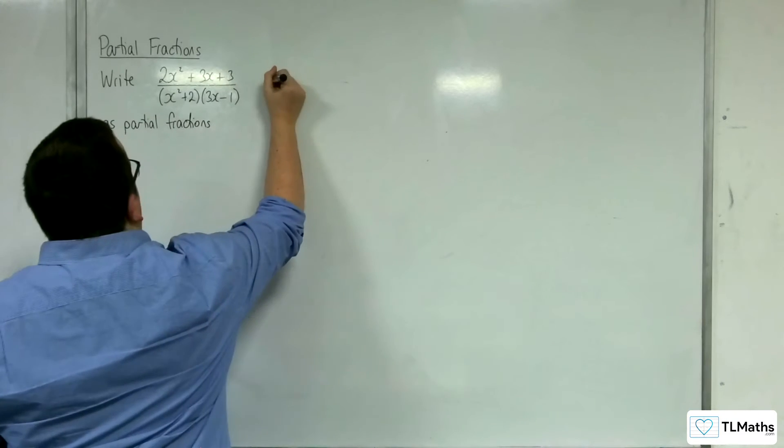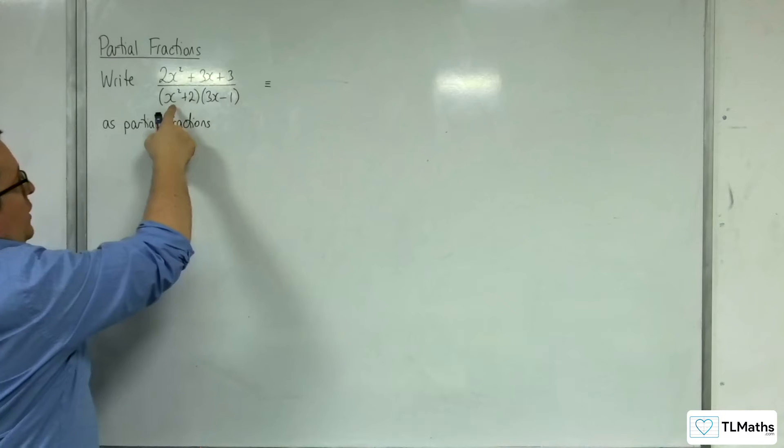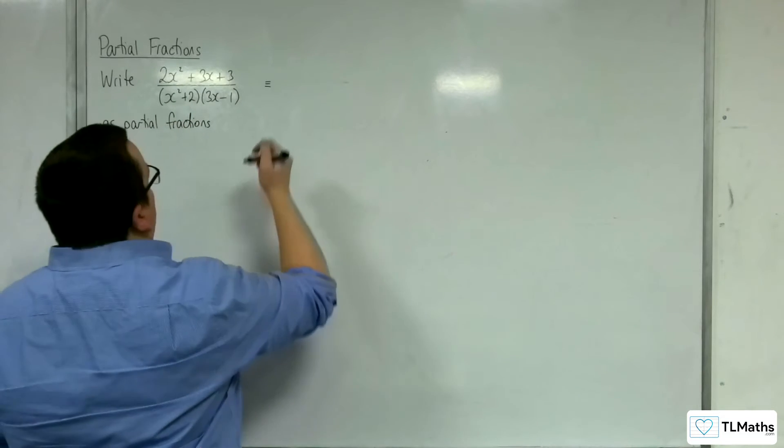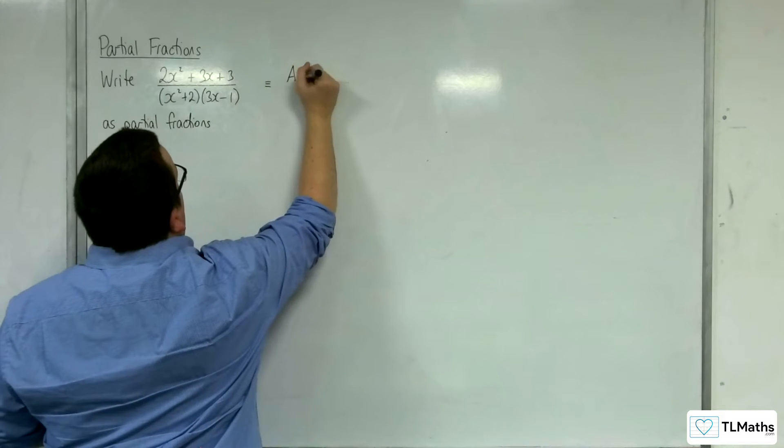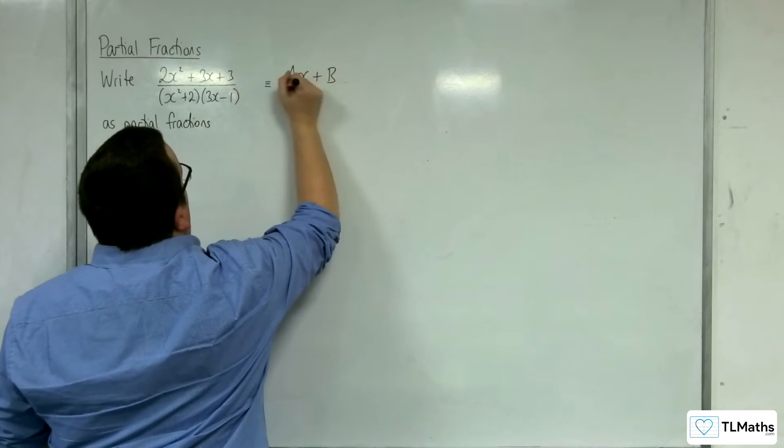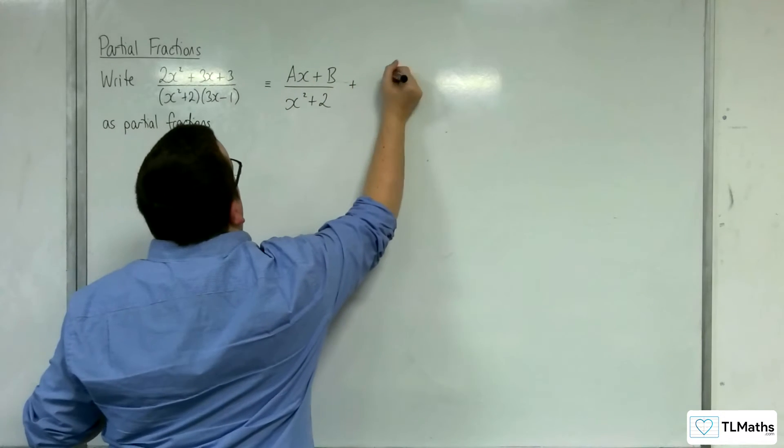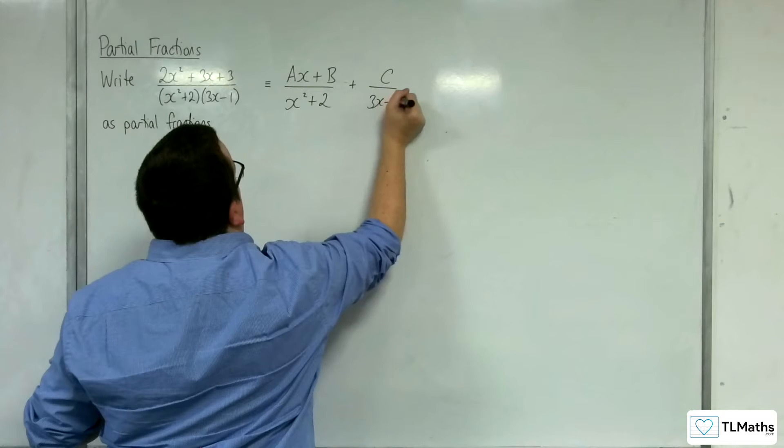The first thing to identify is that we have a quadratic term in the denominator that won't factorise. So the way to write this would be ax plus b, so we want a linear term to be over the x squared plus 2, and then we can have c over 3x minus 1.